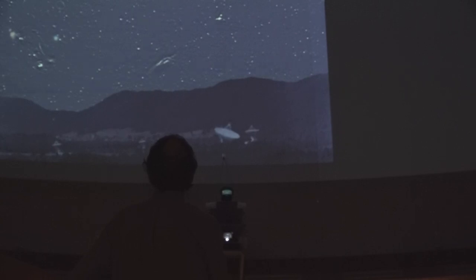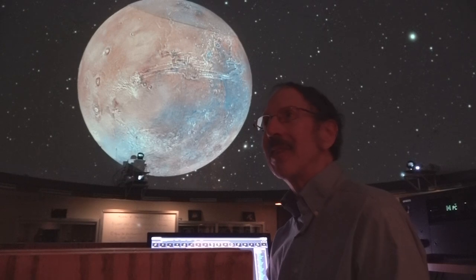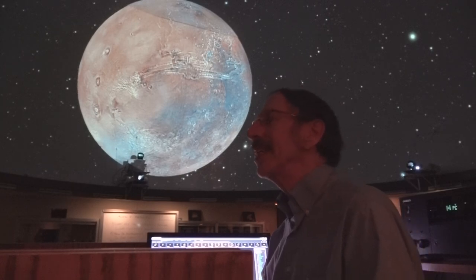A lot of the new observations are being done with these large arrays of radio telescopes. One of them is down in New Mexico. It's called the Very Large Array. And another one is down in Chile, which is called ALMA.